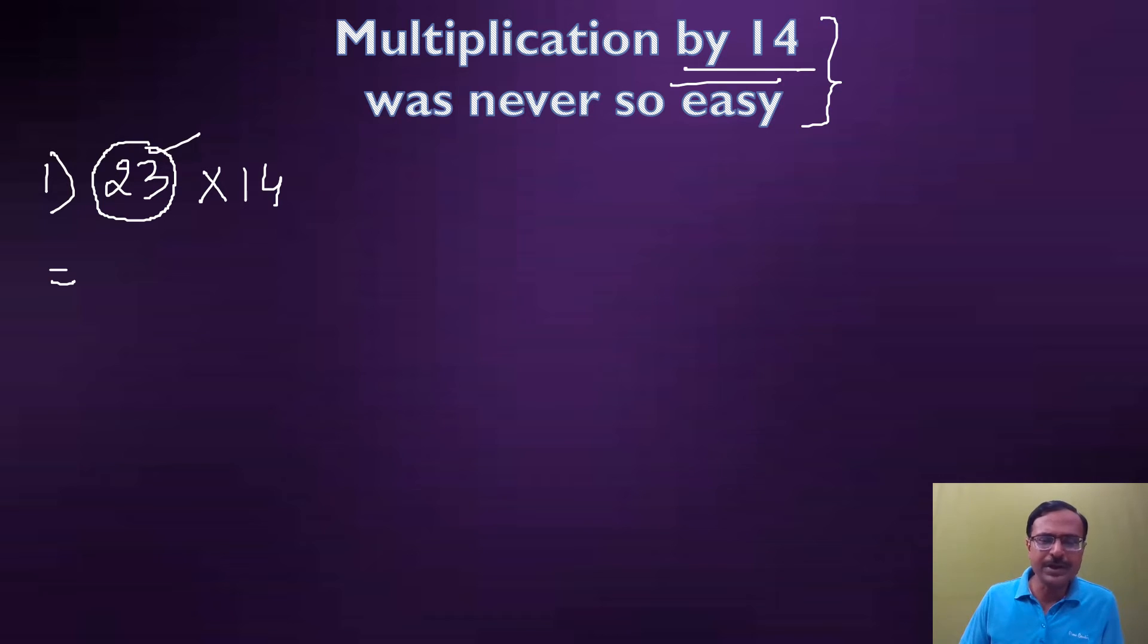From the unit digit I will start multiplying by 4. I don't want 14, I just want 4. So 3 times 4 is 12. I'll write it as an explanatory step, 3 times 4, and then I'll put a slash here. Then I'll move on to the next digit, 2. 2 times 4, again multiply by 4.